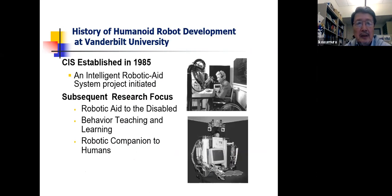Now, historically, we started developing our humanoid robot at Vanderbilt in 1985 when we established research center called Center for Intelligent Systems. And this is the first robot we developed. And this was meant to be a robotic aid to the disabled. And then we did some basic research in behavior teaching and learning. And this was the goal, robotic companion to humans. And this was the kind of vision we had for the humanoid robot Isaac.